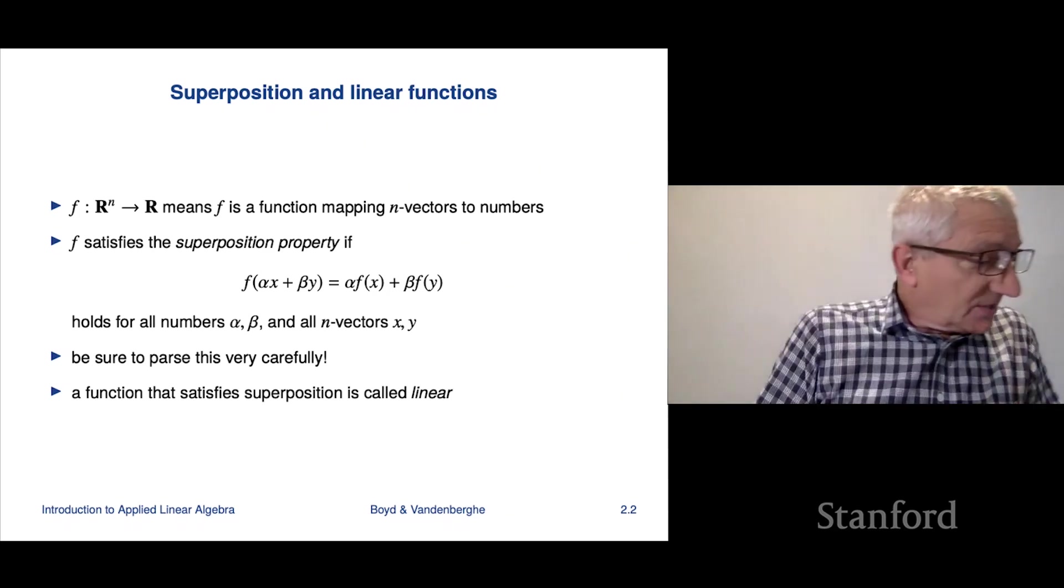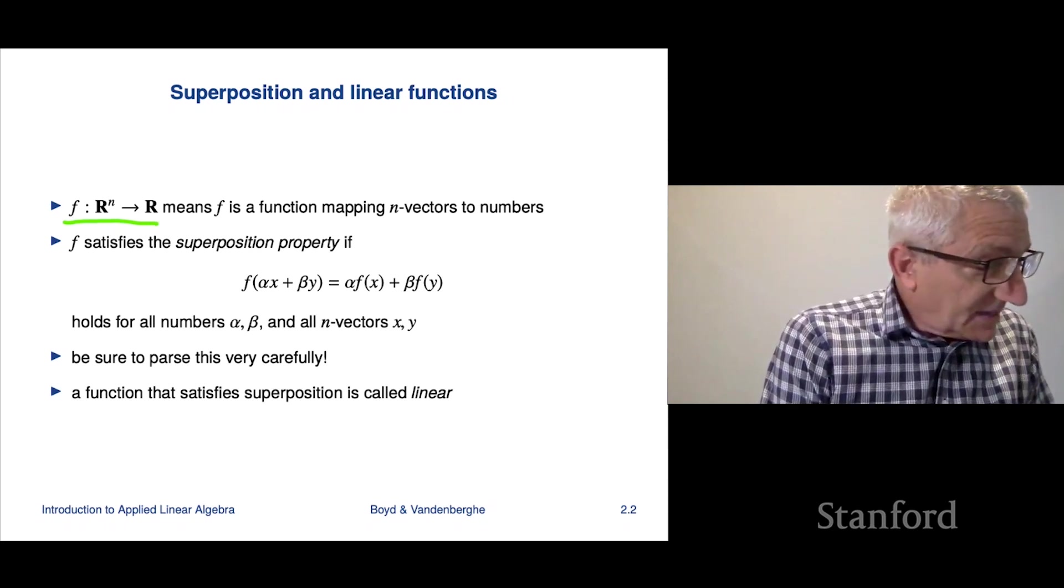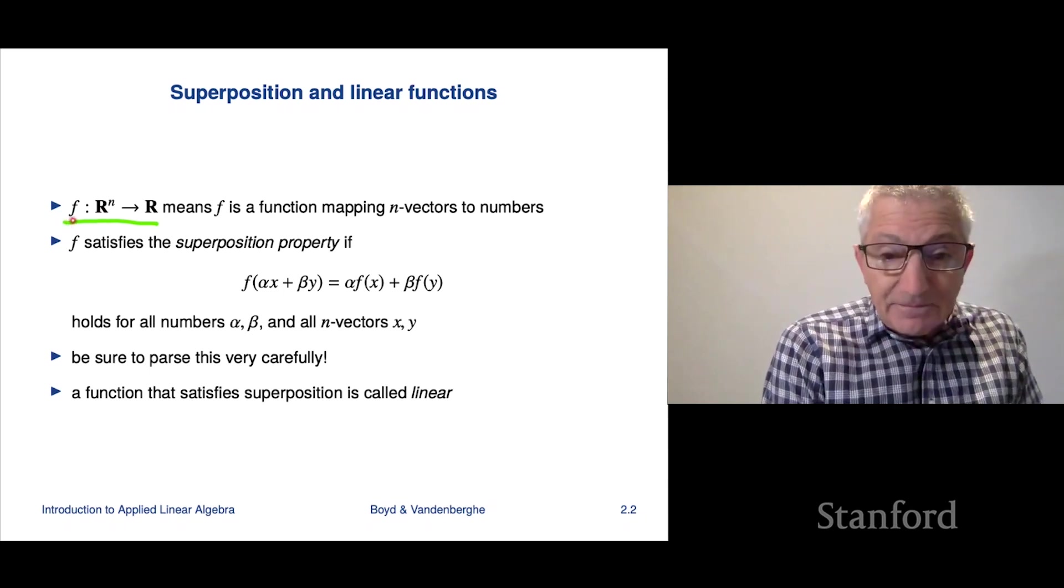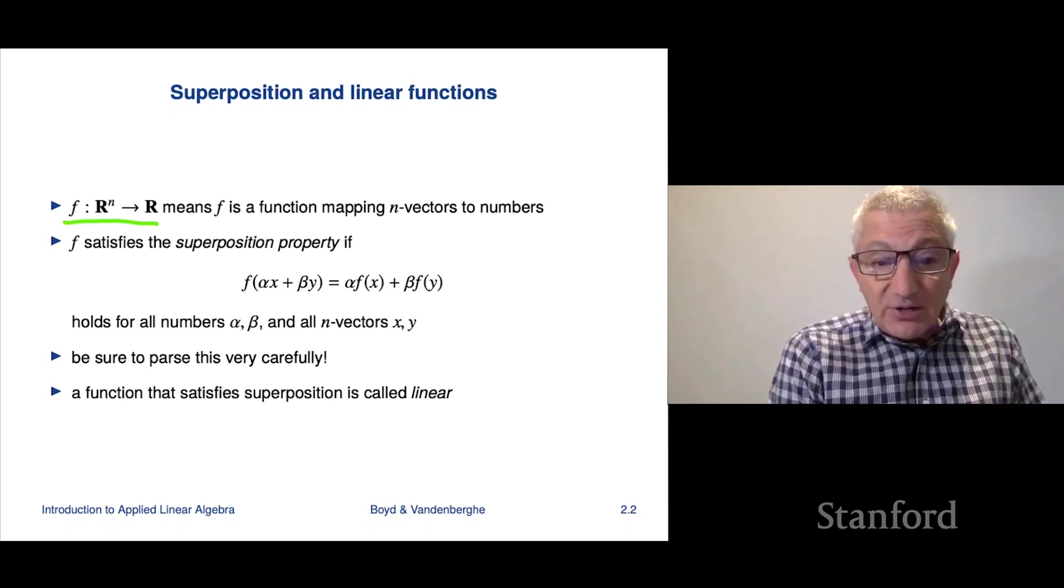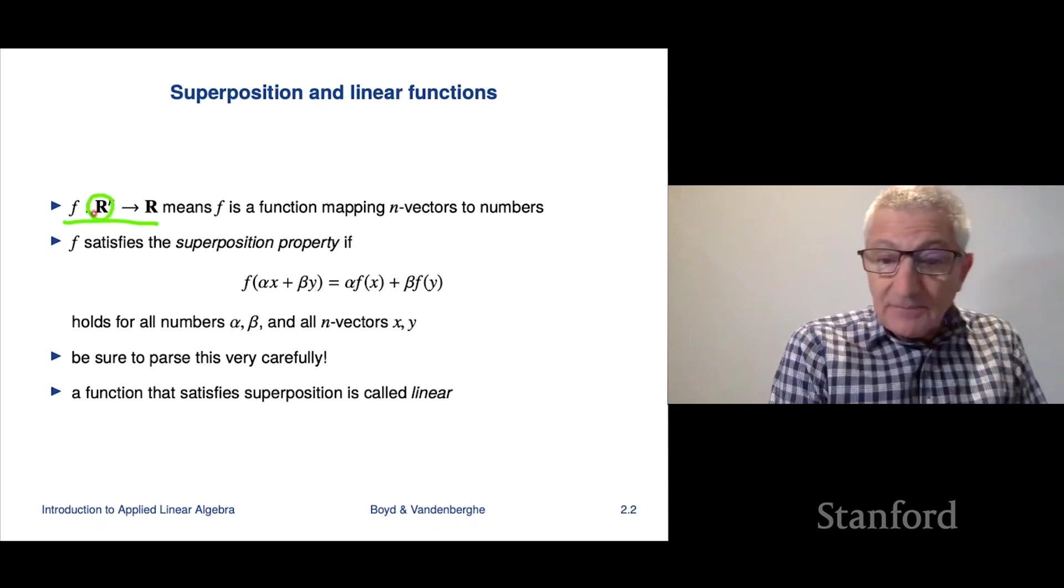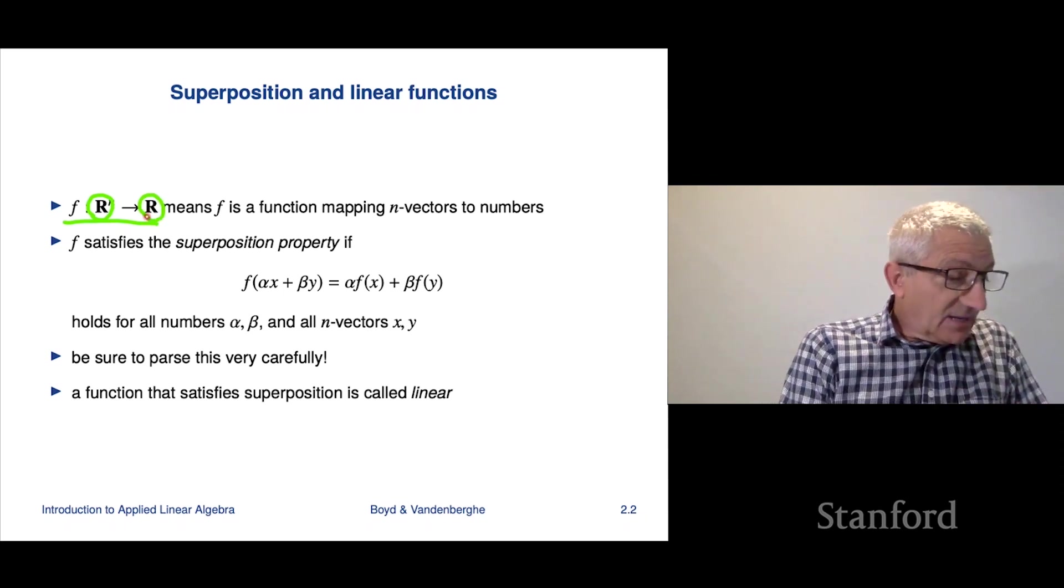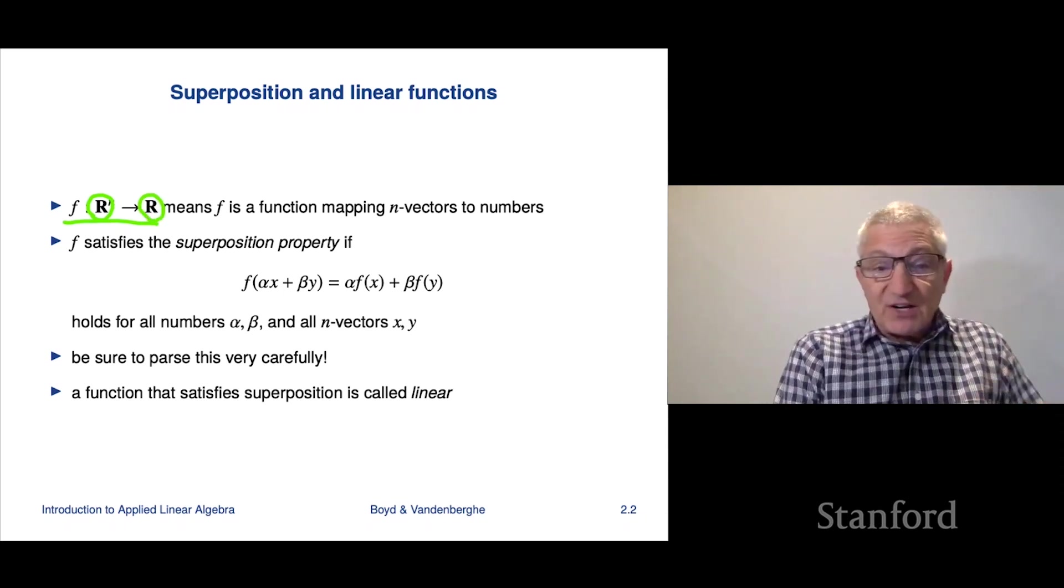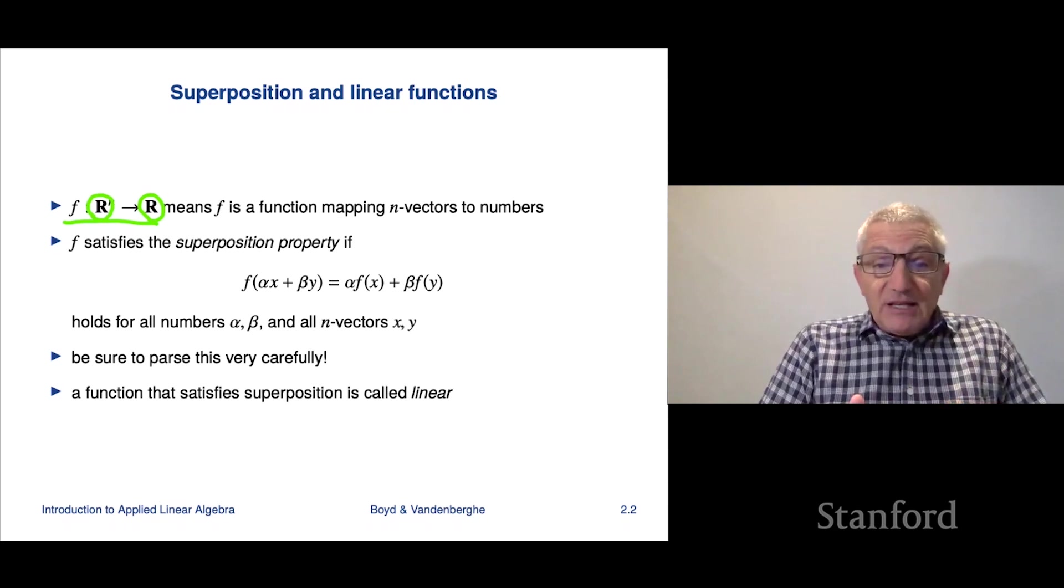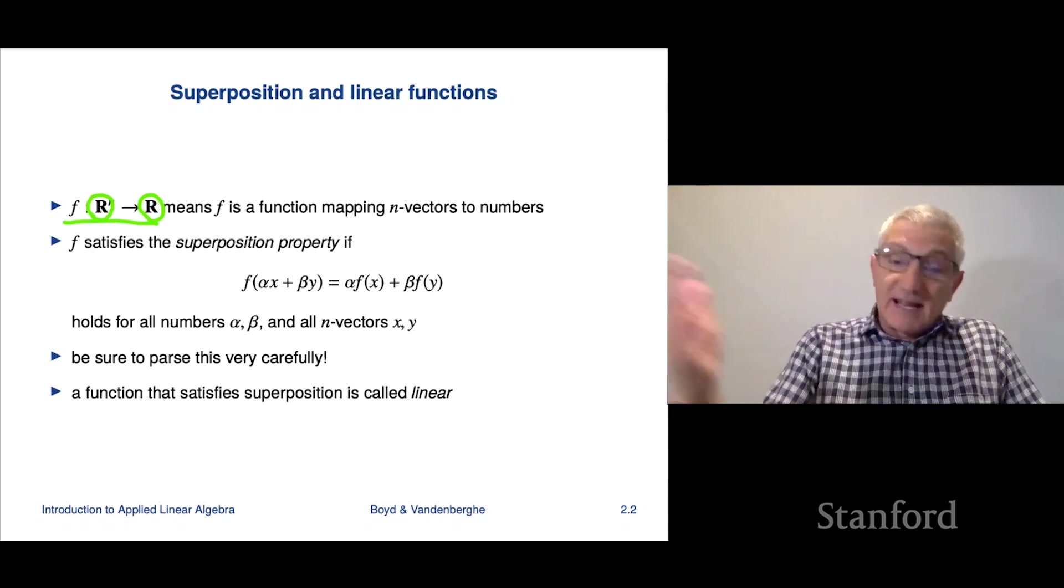Let's start with some notation. It looks complicated, but this is standard mathematical notation. This thing that says f colon and then this bold r with a superscript n to r, what that says is that f is a function. And f takes as argument or an input or what it takes in is an n vector. And then what it does is it gives you back a real number.